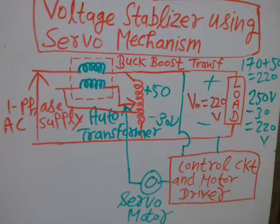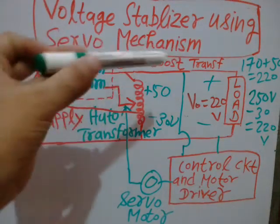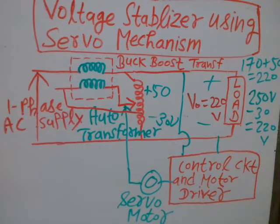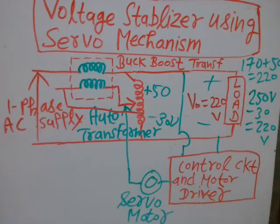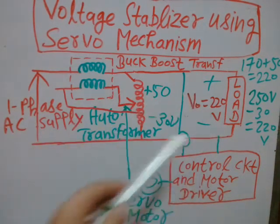This is how the voltage across the load is maintained at the rated value of 220 volts for domestic purposes. This is called stabilization of voltage using the servo mechanism.